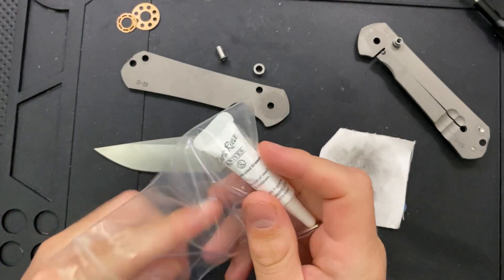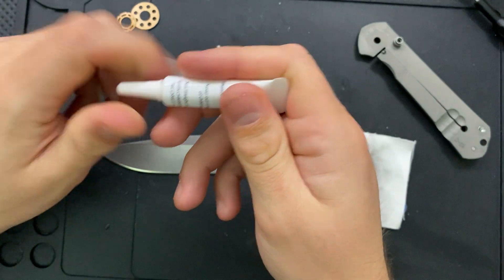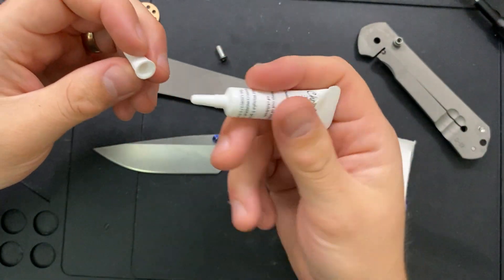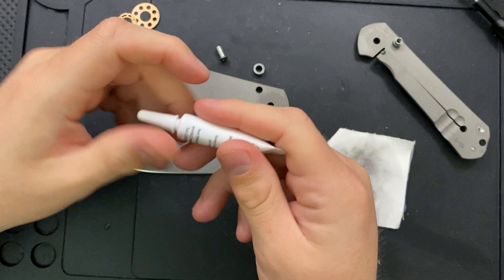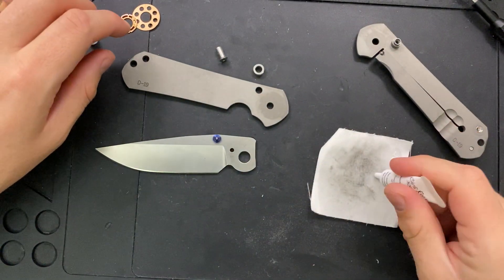One of the things I do like about Chris Reeve knives is that they send you in a little packet here everything you need to take it apart. Namely, one wrench and a thing of fluoro grease. I could have used that wrench, but I'm going to use the fluoro grease that he's got here. Do I love this grease? Not necessarily, but you know what? It works.